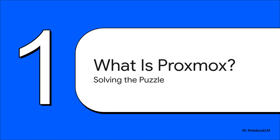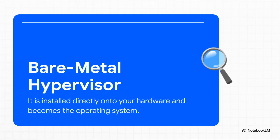Before we can even choose an installation path, we have to tackle a much more basic question: what is Proxmox, really? Because understanding this is the key that unlocks the entire puzzle. Proxmox VE is what's known as a bare metal hypervisor. That's just a fancy way of saying it's not a program you install on top of Windows or another OS — you install it directly onto your computer's hardware, and it becomes the operating system.